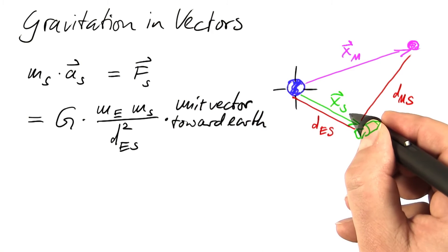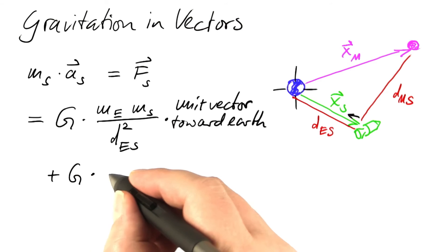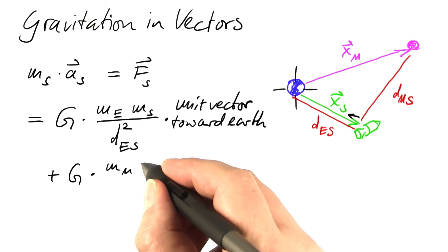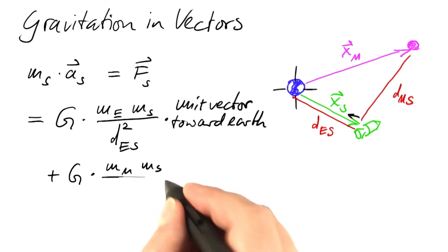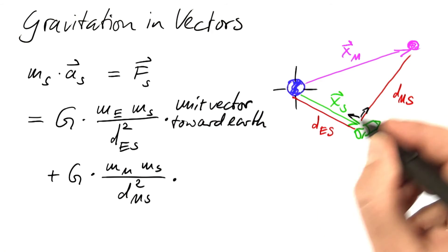And for the moon, we get the gravitational constant times the mass of the moon times the mass of the spacecraft divided by the distance between them squared times a unit vector pointing to the moon.